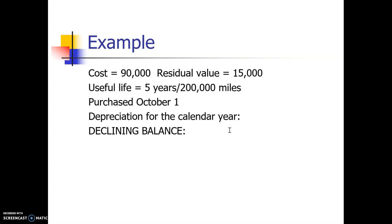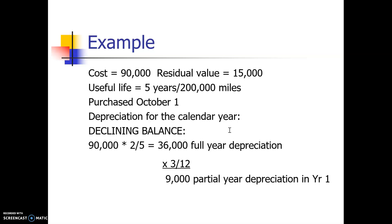Now let's see how this works under double declining balance using the same example — truck purchased October 1st. We calculate a full year of depreciation: $90,000 times 2/5 gives $36,000. Since we held the truck only for October, November, and December, we multiply by 3/12. That gives $9,000 for year one. We debit depreciation expense $9,000 and credit accumulated depreciation $9,000.